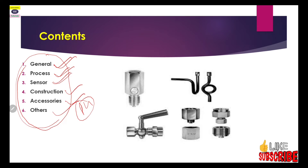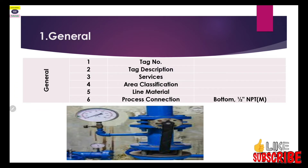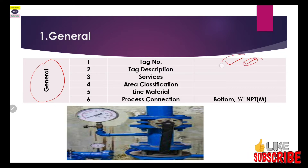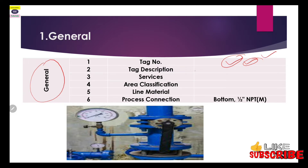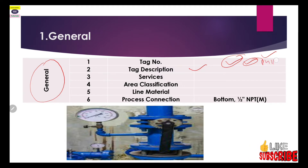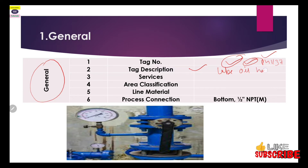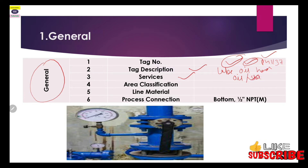In our data sheet, first you should write the tag of your pressure gauge, which should also include your unit tag number. The second point is tag description — for example, if you are writing PG-1137 and this gauge is installed on a lube oil line, then you write 'lube oil gauge.' The service field indicates what fluid is being measured, such as oil.